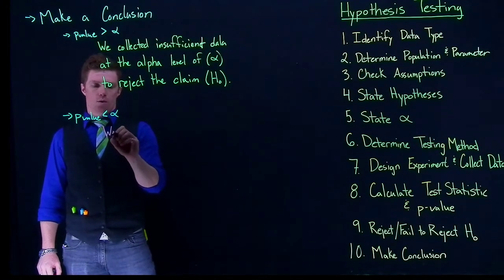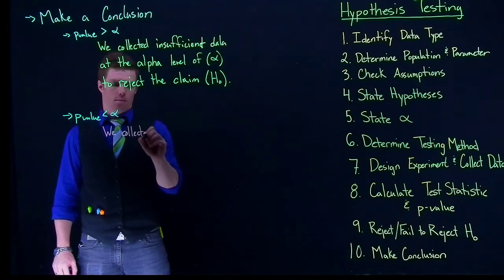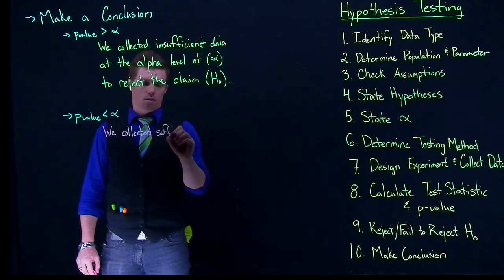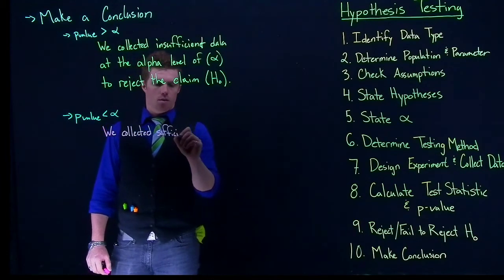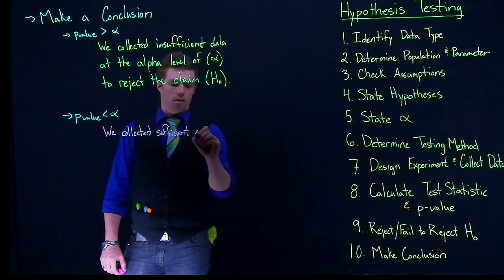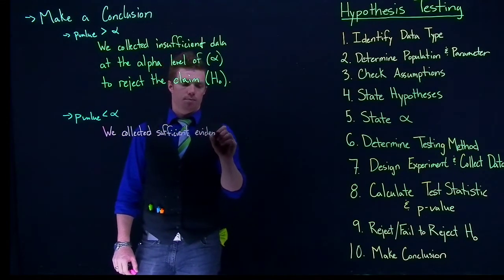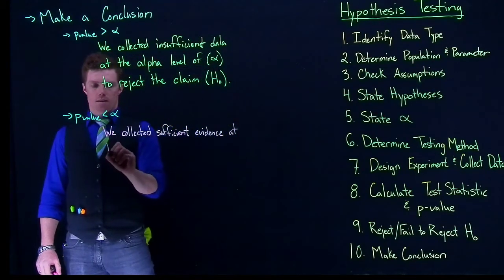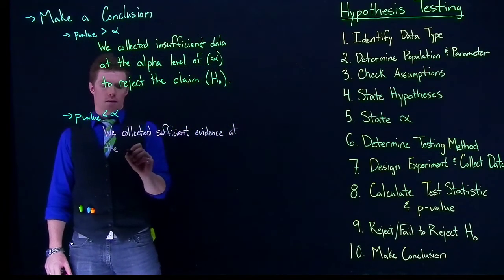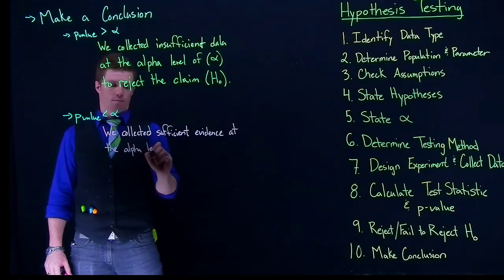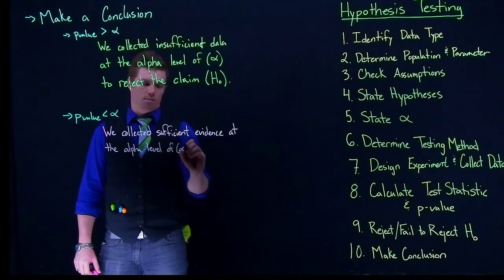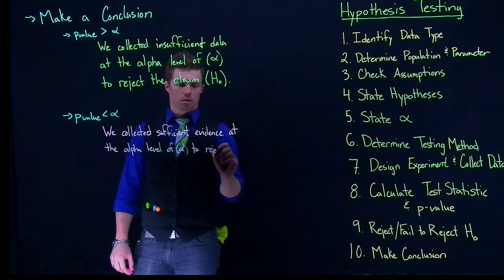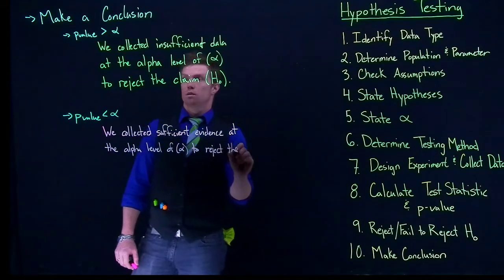We can say that we collected sufficient evidence, or data. You can use either one. We'll say that down here, at the alpha level of alpha, to reject the claim.